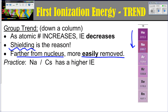As practice, if we've got sodium and cesium, which one has a higher first ionization energy? You can look on the periodic table. Sodium is going to have less shielding because it has fewer energy levels than cesium. Therefore, the higher ionization energy — the one that requires more energy to pull an electron off — is going to be sodium, because cesium has more shielding and those electrons are further out and can be pulled off more easily.